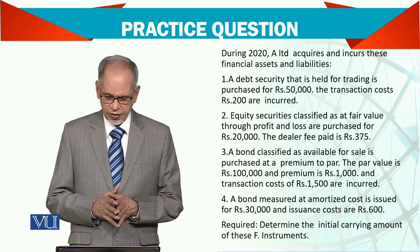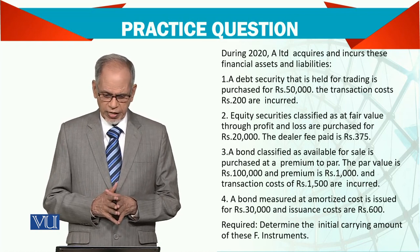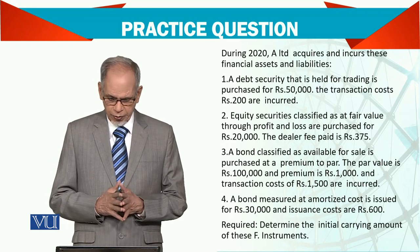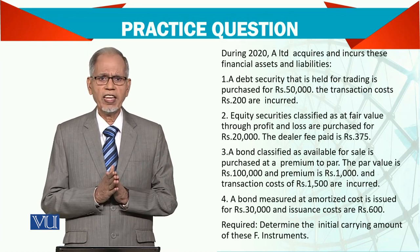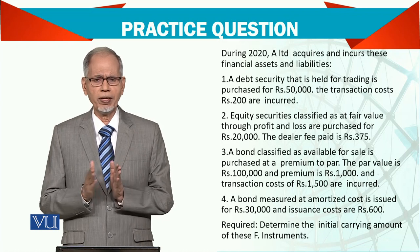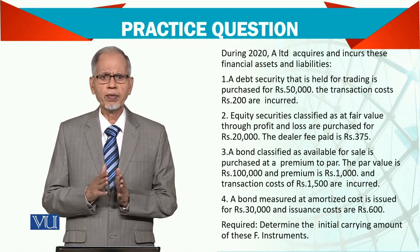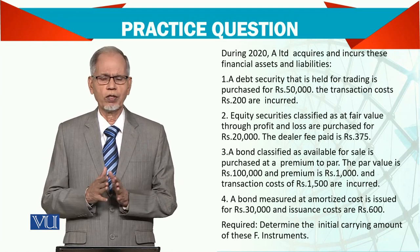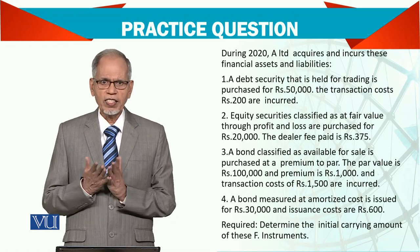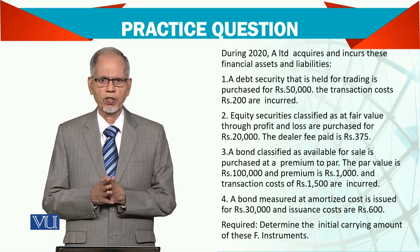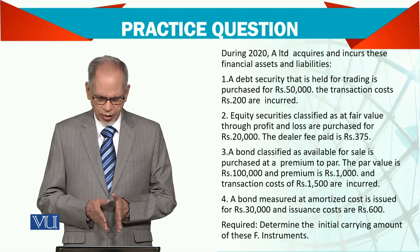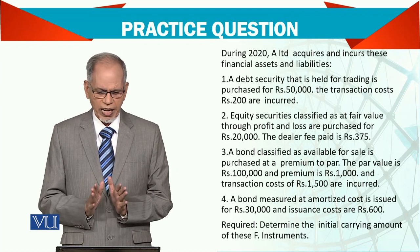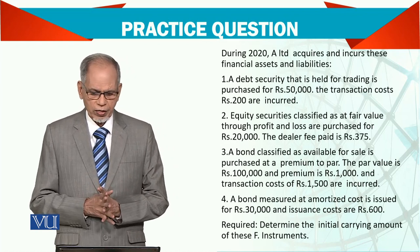The third one is a bond classified as available for sale, purchased at a premium to par. A premium to par means, for example, a bond is worth Rs.1,000 but you are paying Rs.1,020 — that Rs.20 extra is the premium. Sometimes bonds are issued at a discount too, depending on whether there is market demand. The par value is Rs.1,000, the premium is Rs.100, and the transaction cost is Rs.1,500.